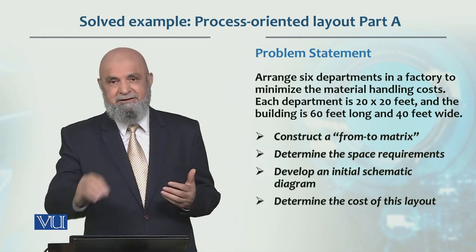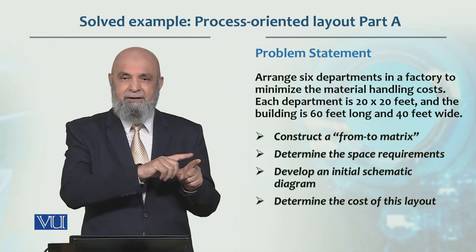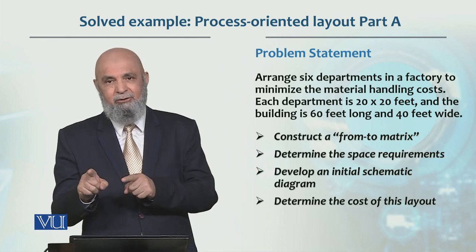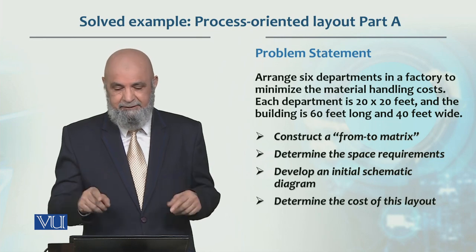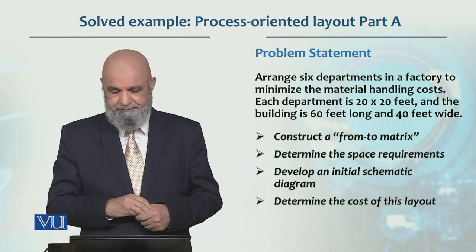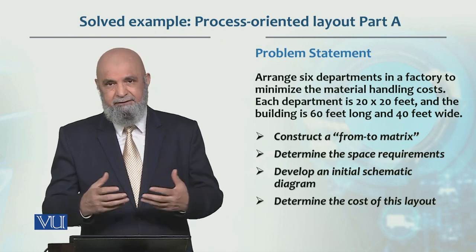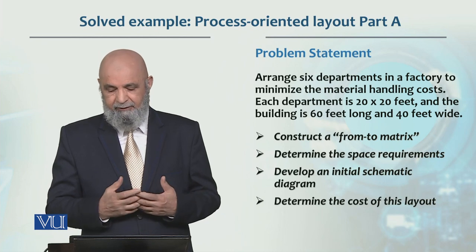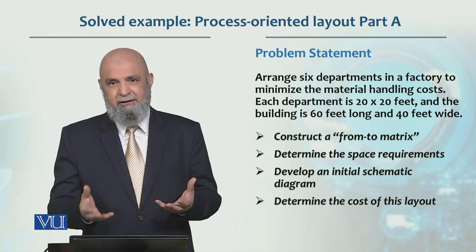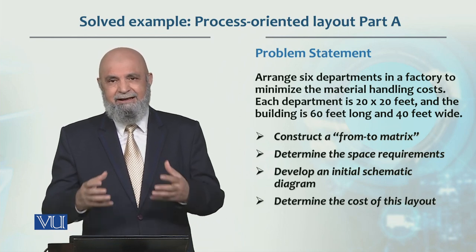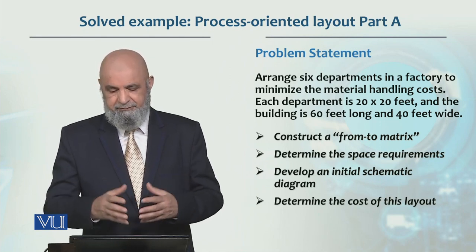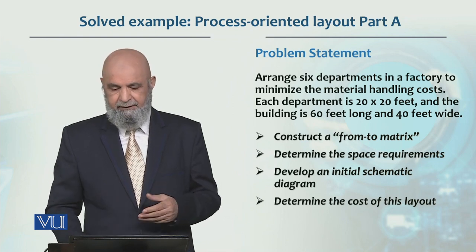It is not just one-directional movement from A to B that we determine, but the combined movement between A and B — both ways. Then we determine the space requirement and the cost of this layout. Let's cover these steps in this problem.